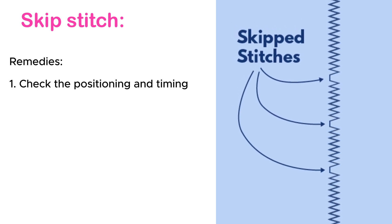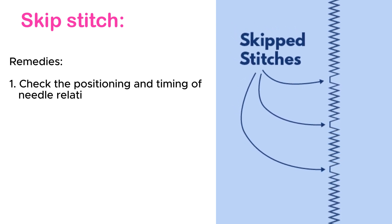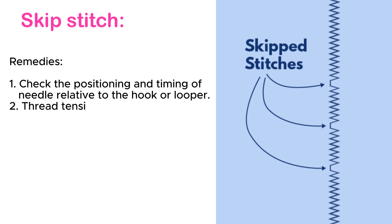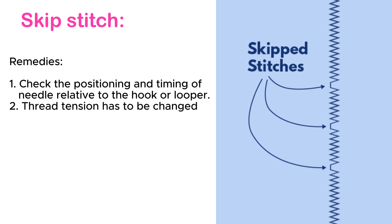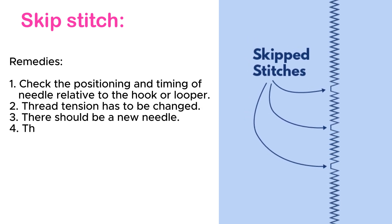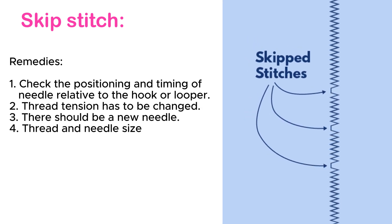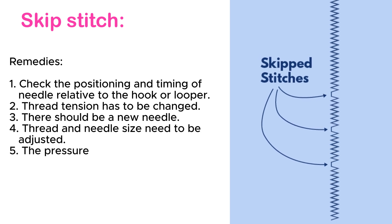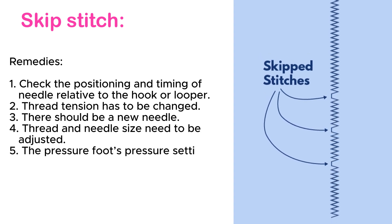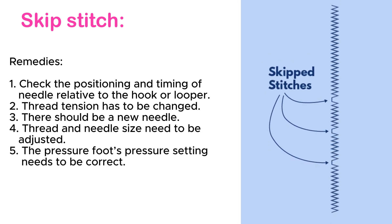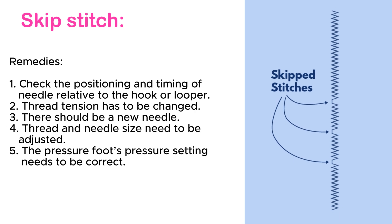Remedies for skip stitch: check the positioning and timing of the needle relative to the hook or looper. Thread tension has to be changed. There should be a new needle. Thread and needle size need to be adjusted. The pressure foot's pressure setting needs to be correct.